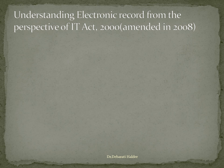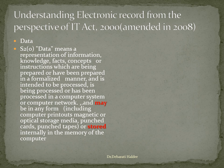Now, let us understand the meaning of electronic record from the perspective of IT Act 2000 amended in 2008. The first and foremost thing that we should understand is the term data. According to Section 2O, data means a representation of information, knowledge, facts, concepts or instructions which are being prepared or have been prepared in a formalized manner and is intended to be processed, is being processed or has been processed in a computer system or computer network, and may be in any form including computer printouts, magnetic or optical storage media, punched cards, punched tapes or stored internally in the memory of the computer.